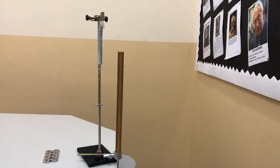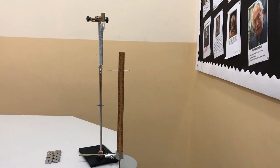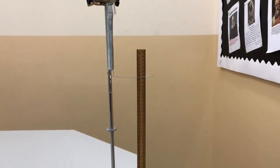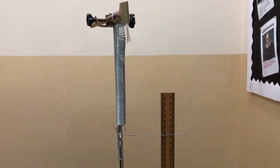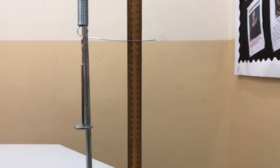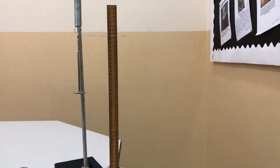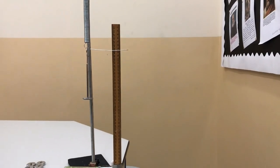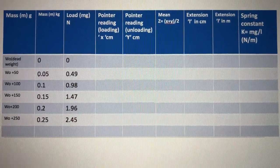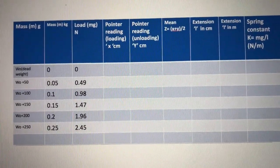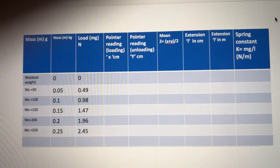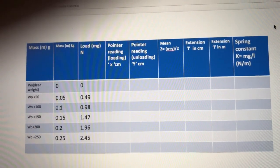The experimental setup for finding the spring constant of a helical spring has been set up here. A helical spring has been suspended from a stand, and a scale is also attached to find the extension that the spring shows once it is loaded. You can see the observation table to find the spring constant, given by the formula k equals mg divided by l, measured in newton per meter.